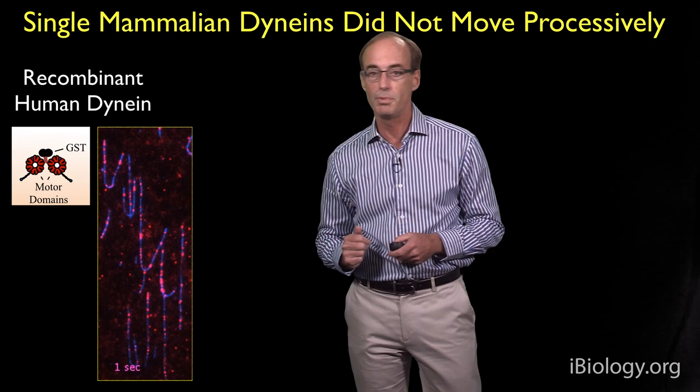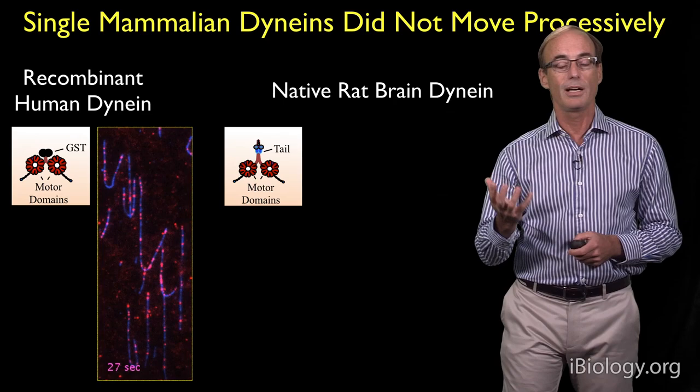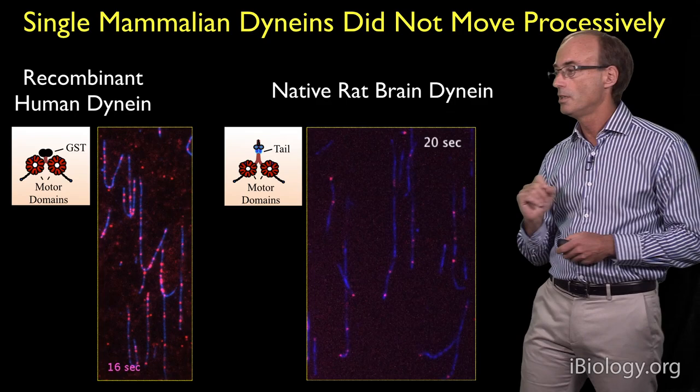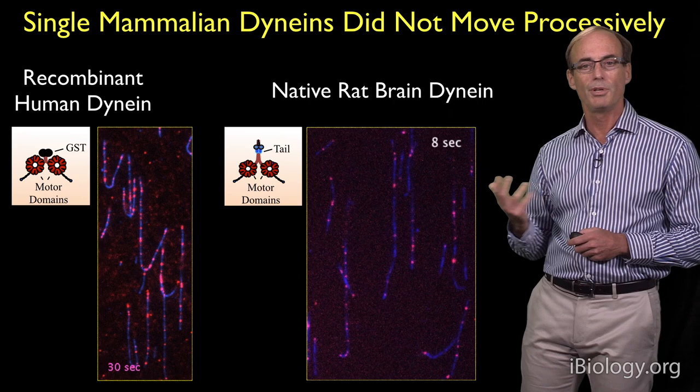They would bind to the microtubule, but did not move. So we took a step back and decided to purify dynein from a native tissue, from rat brain. This is the normal dynein from rat brain. We purified it, we fluorescently labeled it, but again found fairly disappointing results. We saw dynein binding to the microtubule, but no movement.